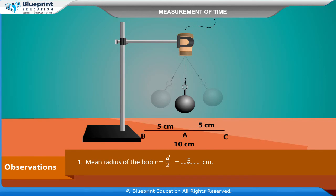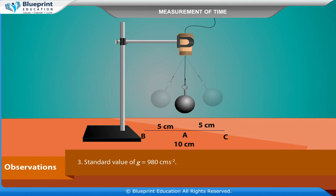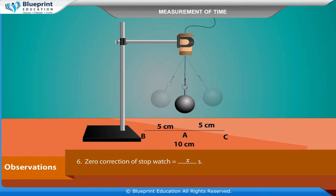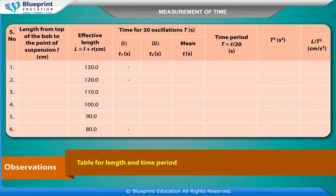Observations: Mean radius of the bob R = D/2 = 5 cm. Length of hook of the bob H = 200 cm. Standard value of G = 980 cm·s⁻². Least count of stopwatch = x seconds. Zero error of stopwatch = x seconds. Zero correction of stopwatch = x seconds.